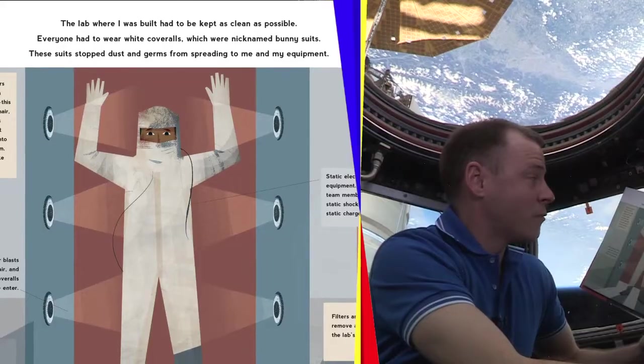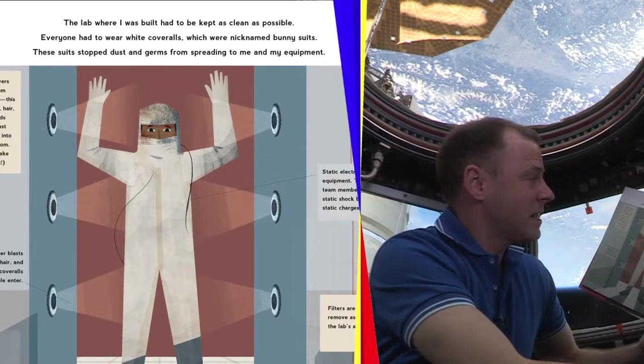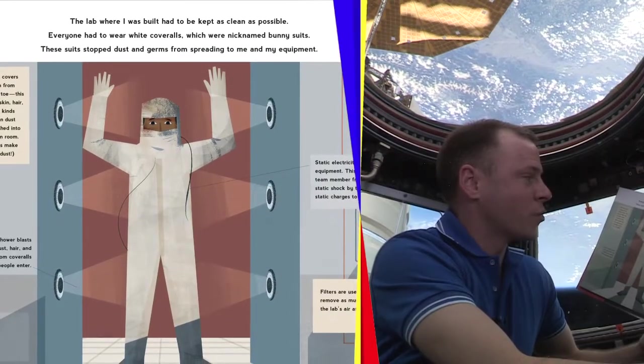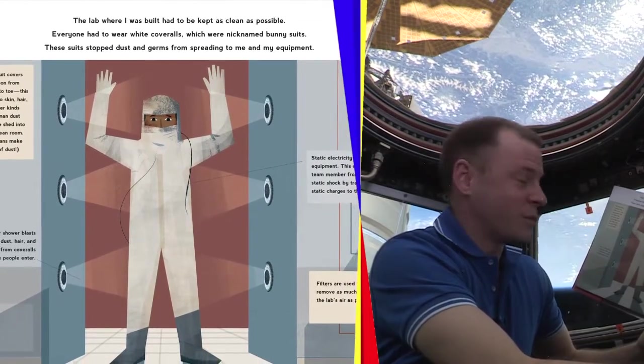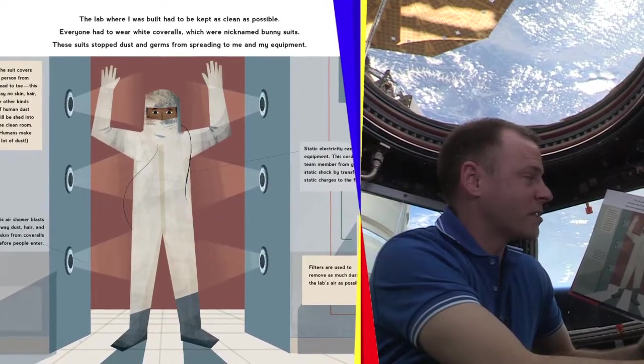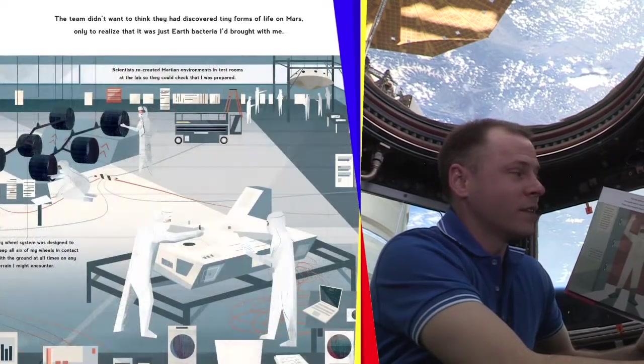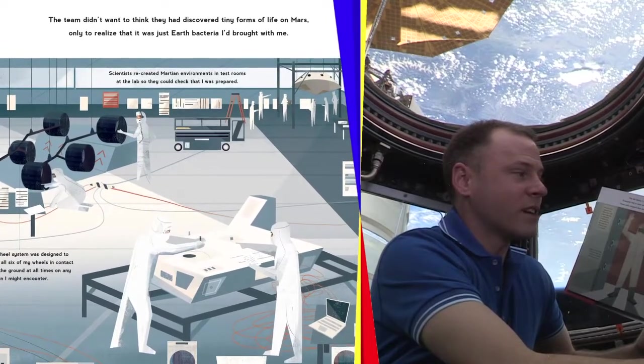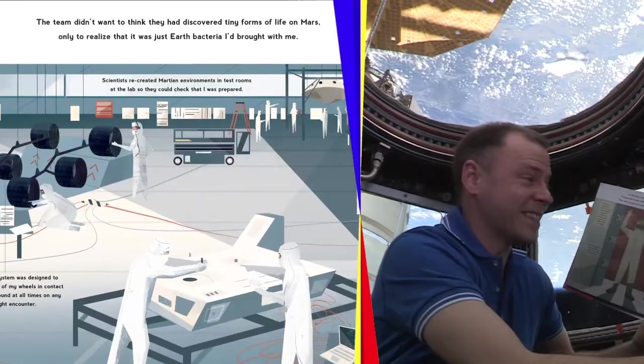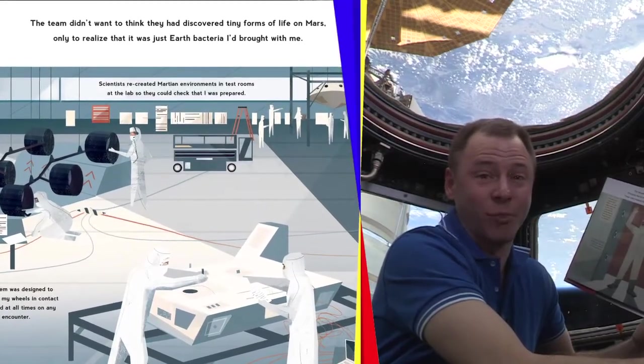The lab where I was built had to be kept as clean as possible. Everyone had to wear white coveralls, which were nicknamed bunny suits. These suits stopped dust and germs from spreading to me and my equipment. The team didn't want to think they had discovered tiny forms of life on Mars, only to realize that it was just Earth bacteria I'd brought with me.